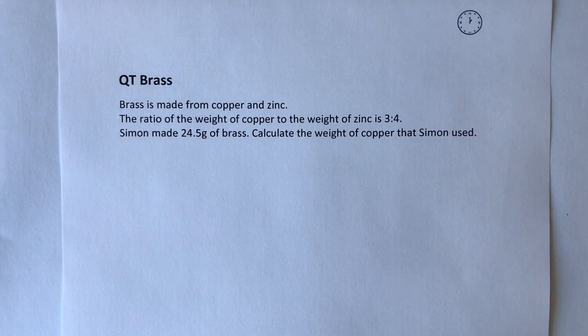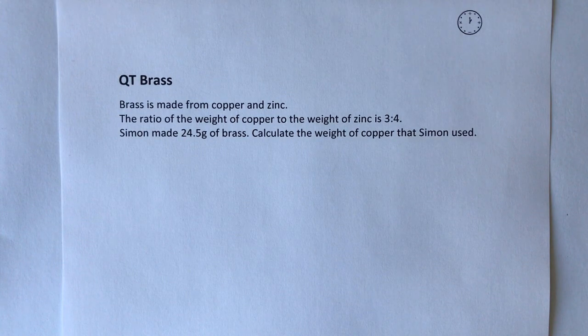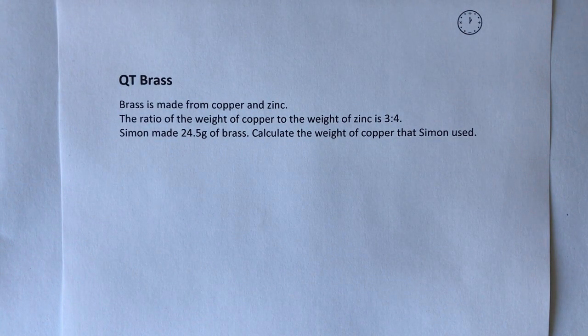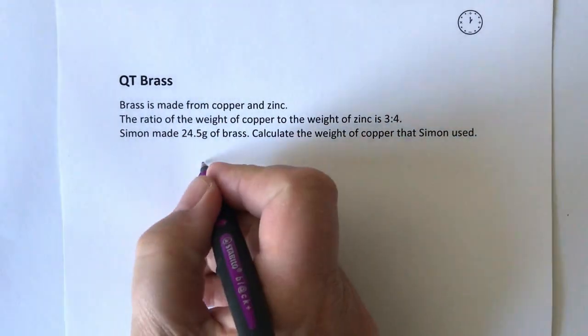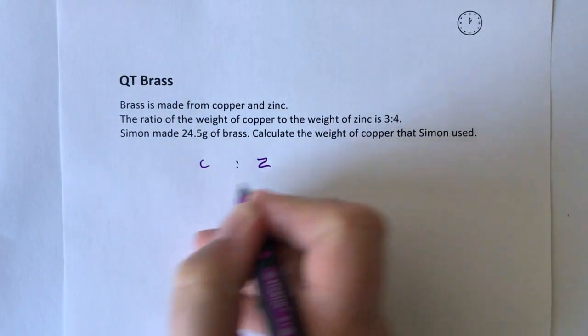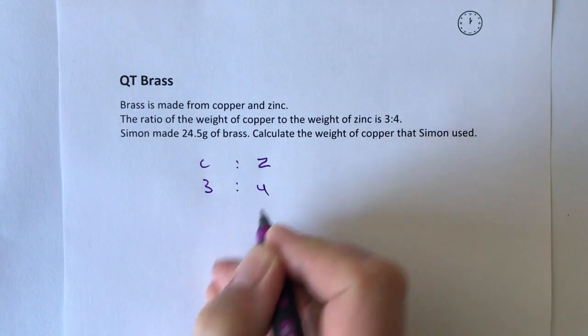It's fairly wordy. It just says brass is made from copper and zinc. The ratio of the weight of copper to the weight of zinc is three to four. So really all you need to take from that is that we've got copper and we've got zinc and it's in the ratio of three to four.